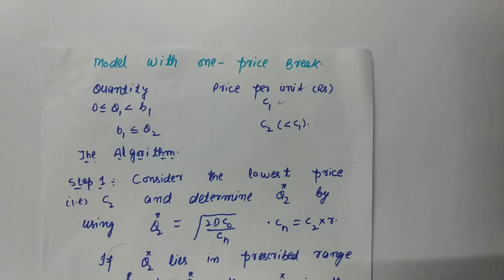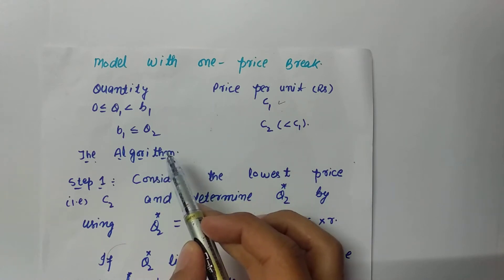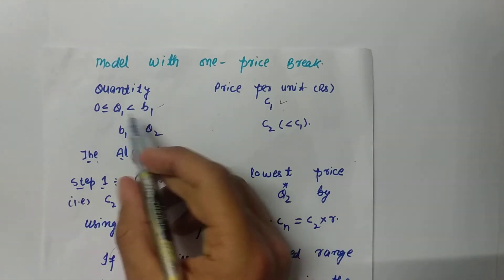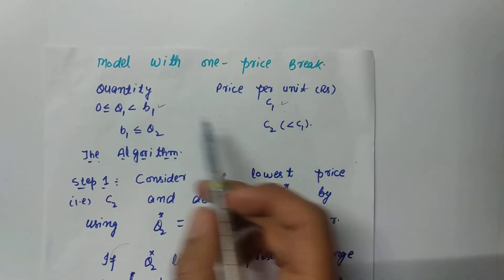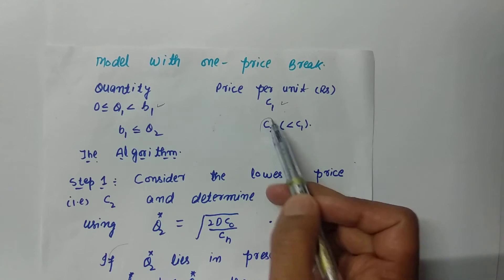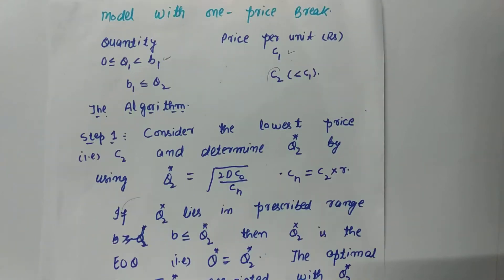Hello friends, welcome to my YouTube channel. Today we are going to discuss the Economic Order Quantity model with price discounts. This model is similar to the basic EOQ model; the only difference is the price discount. Suppose we have a price discount schedule quoted by a supplier, in which a price break occurs at quantity B1. The discounted price C2 is always less than the previous price C1.